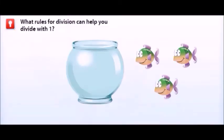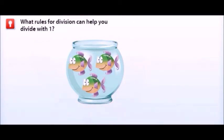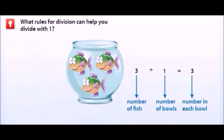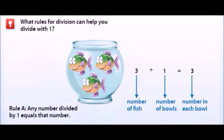What rules for division can help you divide with 1? Let's say you have only 1 fish bowl and 3 fish. Because there is only 1 fish bowl, all of the fish must go in that fish bowl. You can create a division sentence: the dividend is 3 fish, the divisor is 1 bowl, and the quotient is 3 fish in each bowl. So 3 divided by 1 is 3. This is a rule of division: any number divided by 1 equals that number.